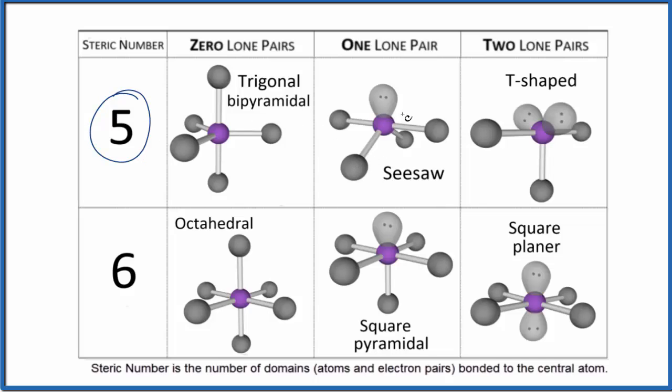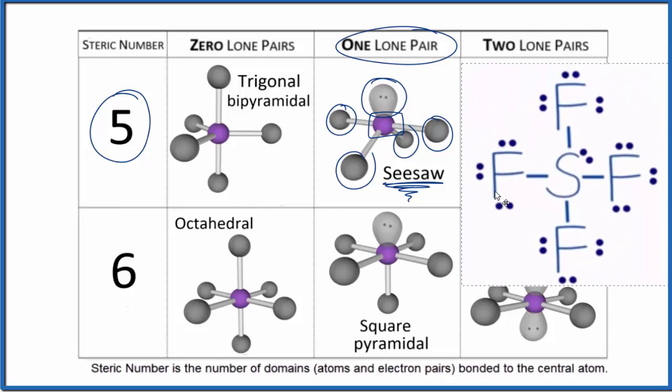That means we have five things attached to the central atom here. So we have one, two, three, four, four atoms, and then the one lone pair. So if we have five things attached, one of them is a lone pair, that's going to give us this seesaw molecular geometry. A good example of this is SF4.